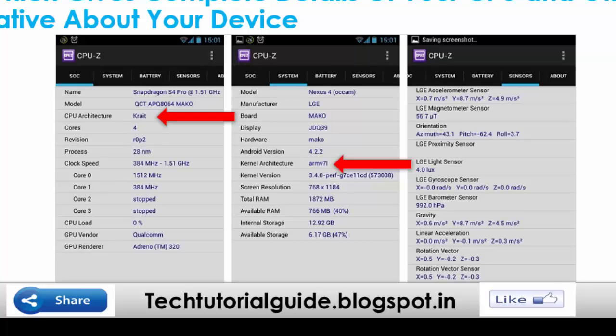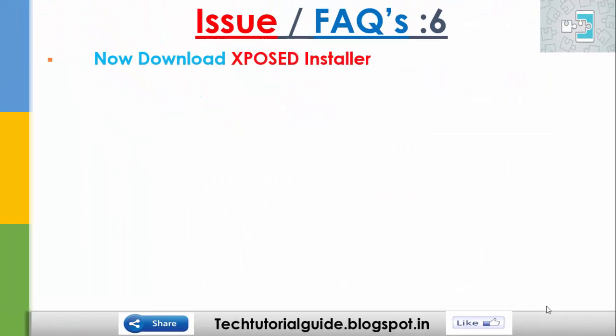If you have an ARM version 64 device, you need to download the ARM64-based Xposed. If you have an Intel-based x86 device, you must download the x86-based Xposed framework. Otherwise you may get an error during installation on TWRP or framework mode.